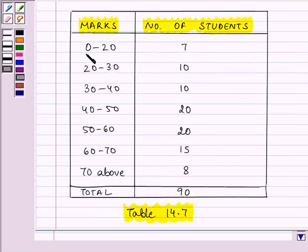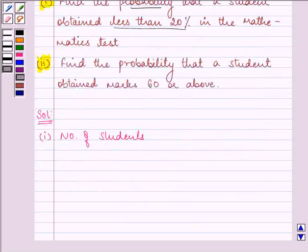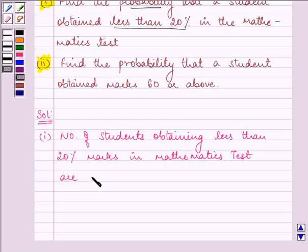The number of students obtaining marks between 0 to 20 is given to us as 7. So there are 7 such students.